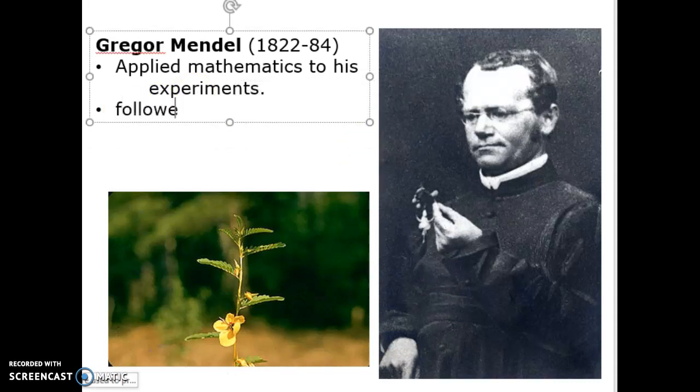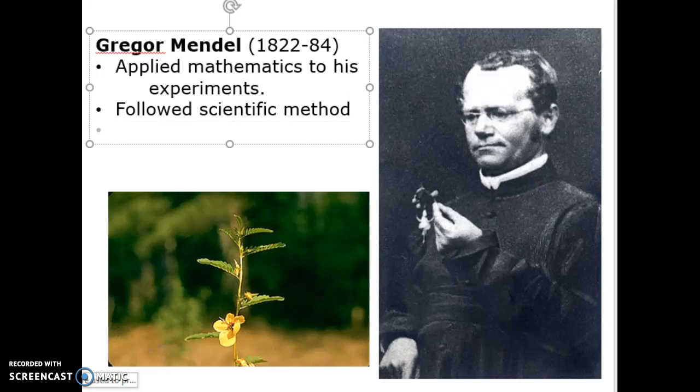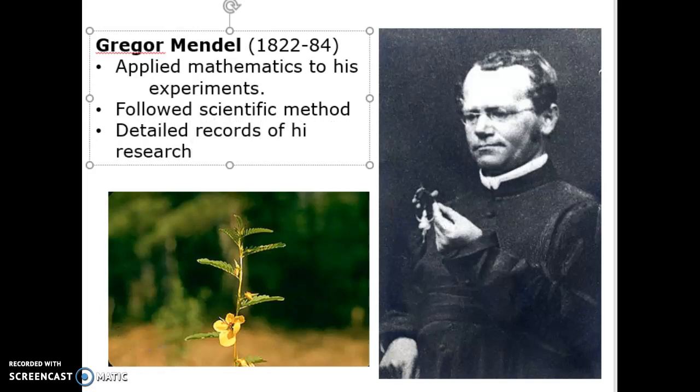He followed the scientific method as he was doing his research. Here's a hypothesis, here's an experiment, let's collect data, let's analyze the data. Does it support the hypothesis? Accept or reject? And then repeat. Mendel did that. He did a lot of repeating. He also kept detailed records of his research so it could be repeated. That's a huge thing in science. You have to have your recipe, you have to have your records, otherwise nobody else can repeat it to confirm.